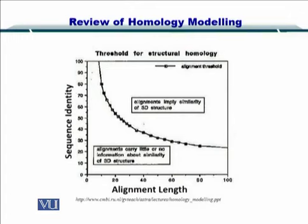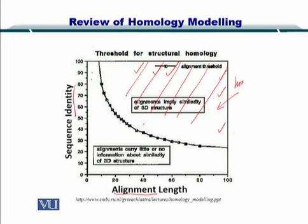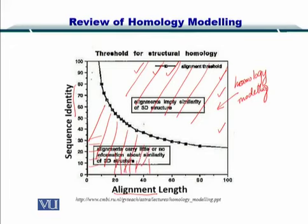Why did we have these three types of structural modeling approaches? If you look at this graph, we had alignment on the horizontal axis and sequence identity on the vertical axis. If you have a high alignment score and high identity, then we could go for homology modeling. However, if the identity was low or the alignment was low, then we had two options: one was to go for fold recognition or threading, and the second option was ab initio modeling.